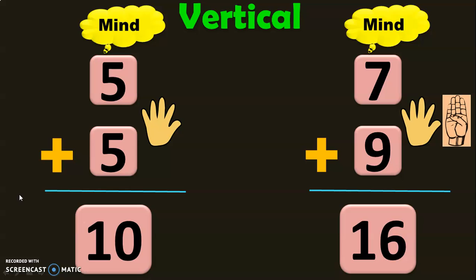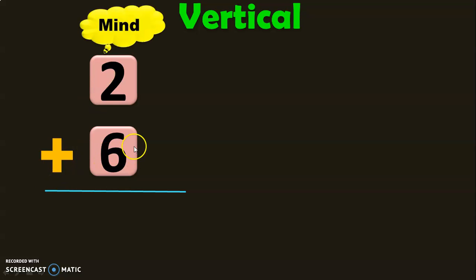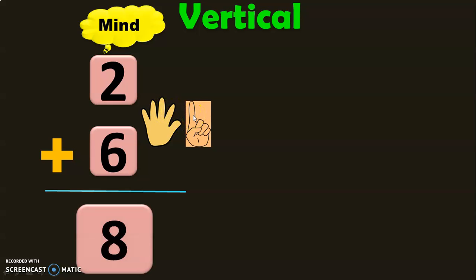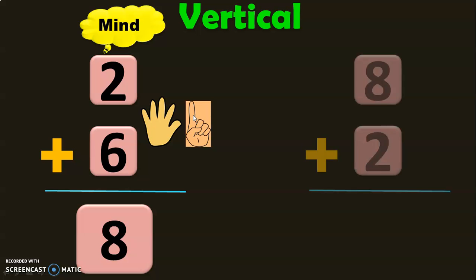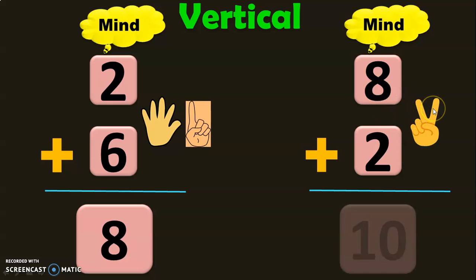Let us do a few more examples to understand vertical type of addition. We have 2 plus 6: 2 in the mind and 6 in the fingers — 5 fingers on one hand and 1 on the other. After 2: 3, 4, 5, 6, 7, 8. So the sum of 2 plus 6 is equal to 8. The next sum is 8 plus 2: 8 in the mind and 2 in the fingers. After 8: 9, 10. So 8 plus 2 is equal to 10.